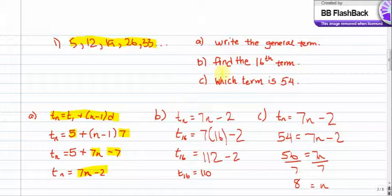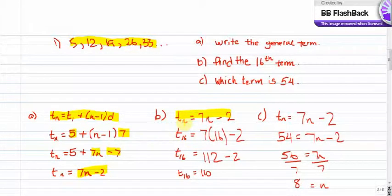Now let's go to B. B says find the value for the 16th term. Here's our formula again from part A: T of N equals 7N minus 2. We can fill in 16 for N. So 7 times 16 gives us 112, and 112 minus 2 gives us a final answer of 110.